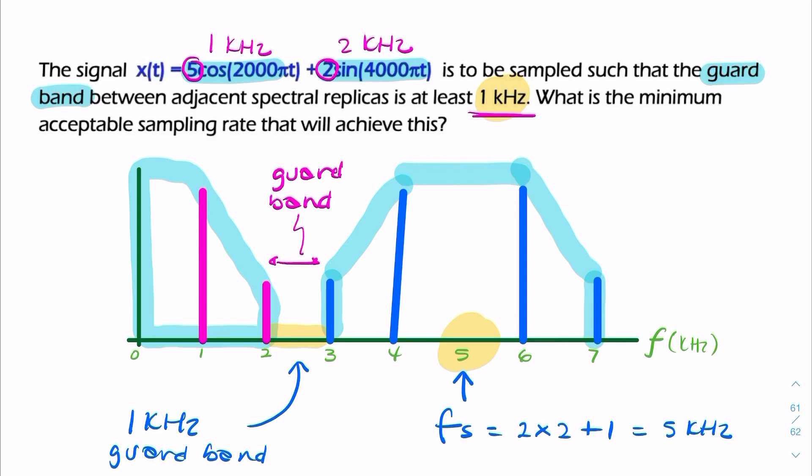So when you have a question like this, in order to find the suitable sample rate where we're oversampling, if you're given a guard band, you simply add that to the Nyquist rate.